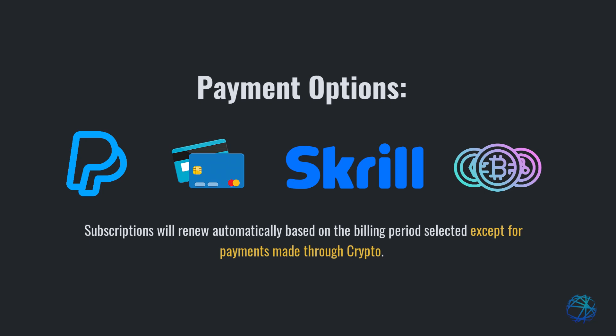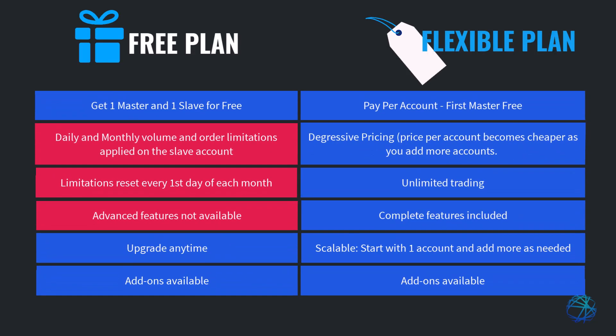Let's compare both plans. In summary, the free plan allows you to try out the trade copier for free. However, it does have limitations when it comes to features and the number and volume of trades you can copy. The flexible plan, on the other hand, is the most powerful plan. You pay per account you connect, and it unlocks unlimited trading in all features offered by Duplicium.